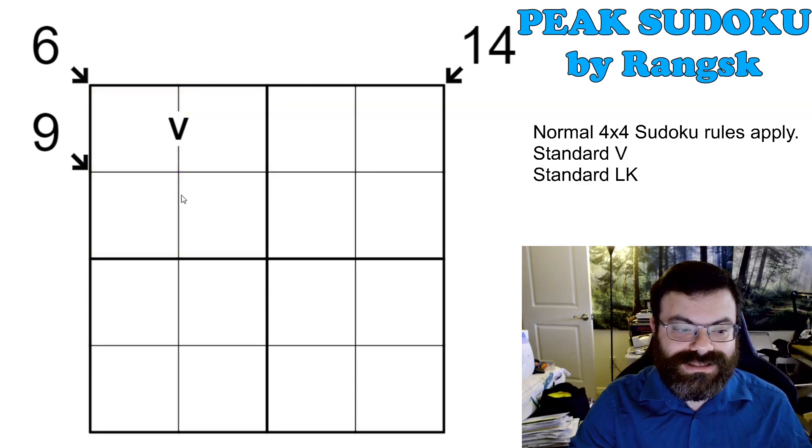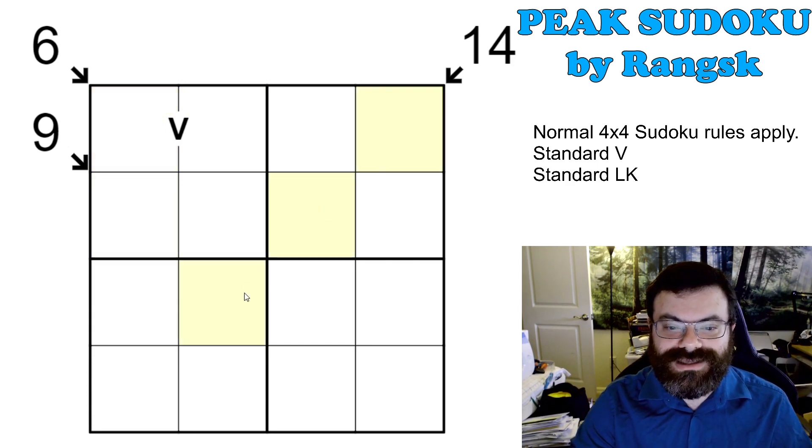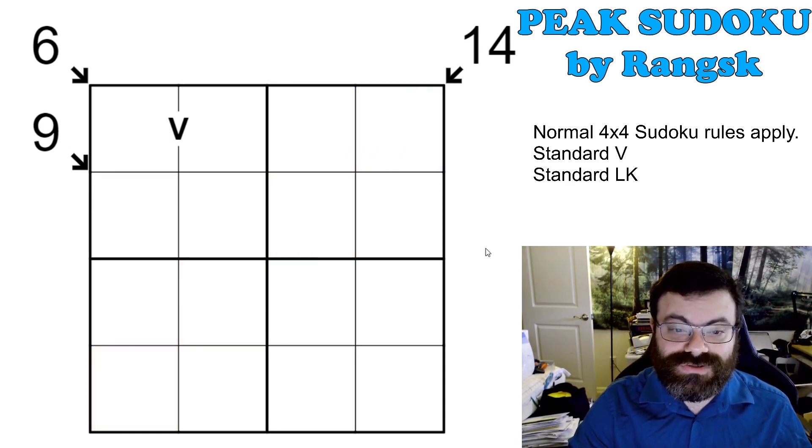And also we have the V constraint, which is just here once, which means these two digits add to 5. And then we also have these little killers where we have arrows that point down diagonals, and the cells in the diagonal sum to the clue next to the arrow. So go ahead and give it a try.